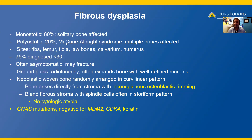And when you see polyostotic fibrous dysplasia, think of the syndrome McCune-Albright. Common sites include the ribs, the femur, tibia, jaw bones, calvarium, or the humerus. However, unusual sites may also occur in fibrous dysplasia, including the small bones of the hands and feet, as well as the spine.